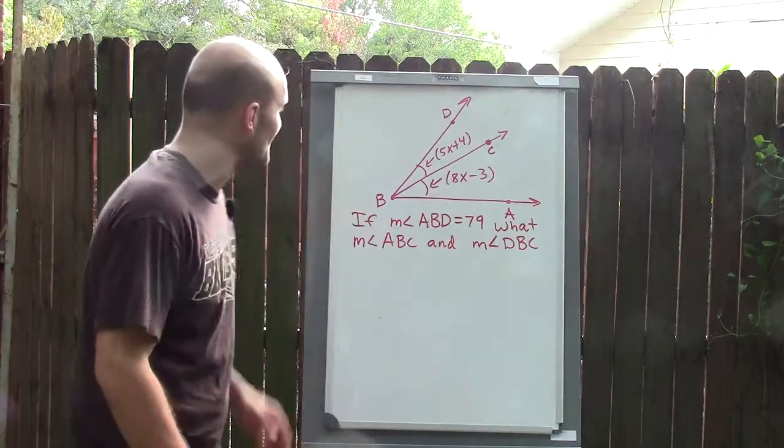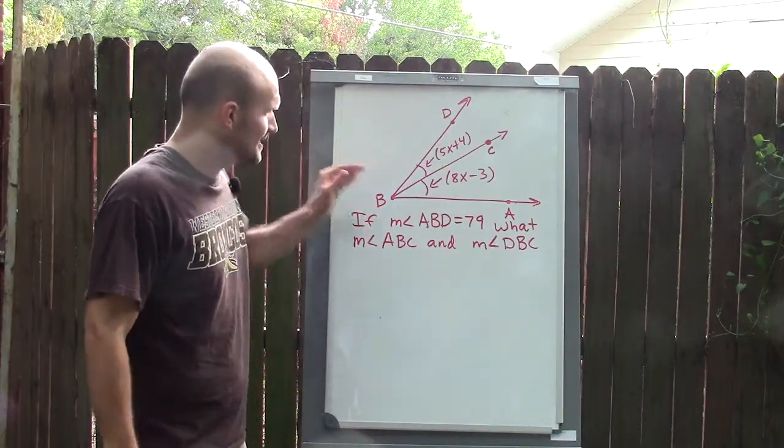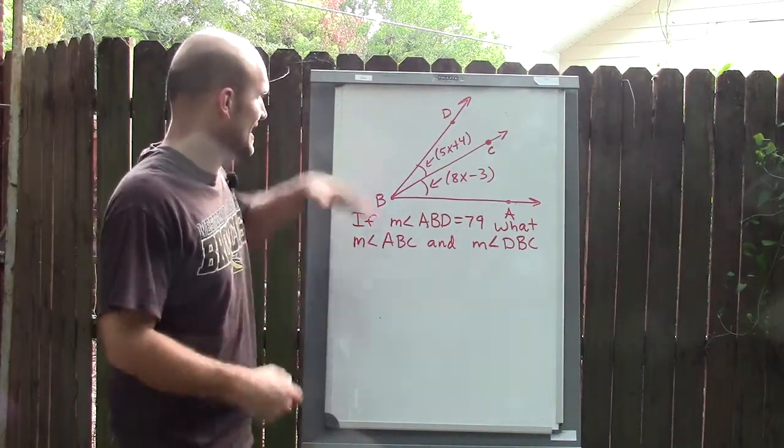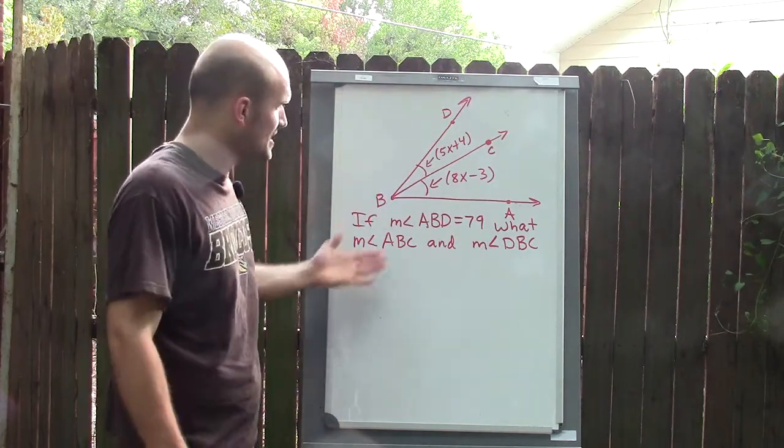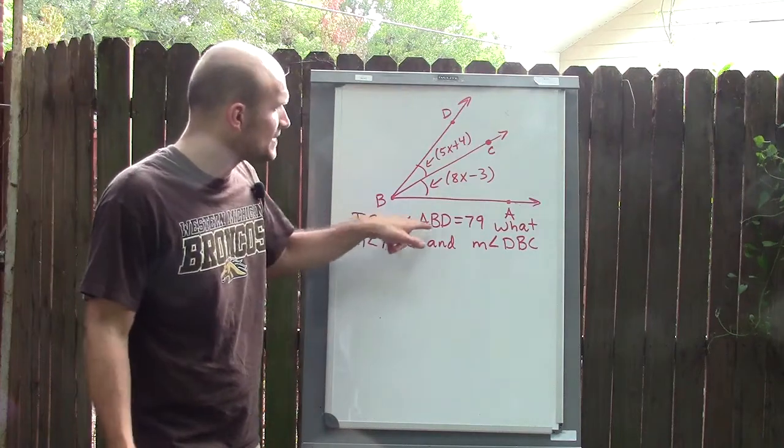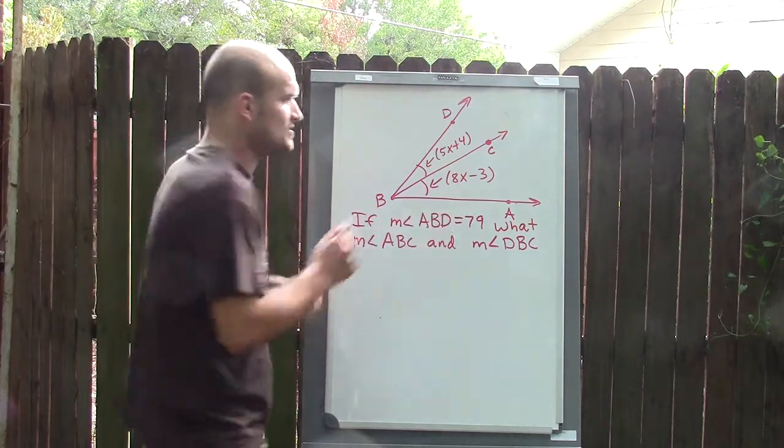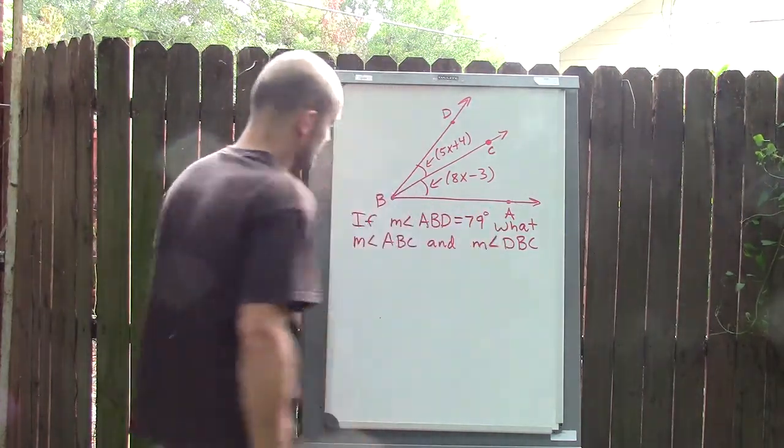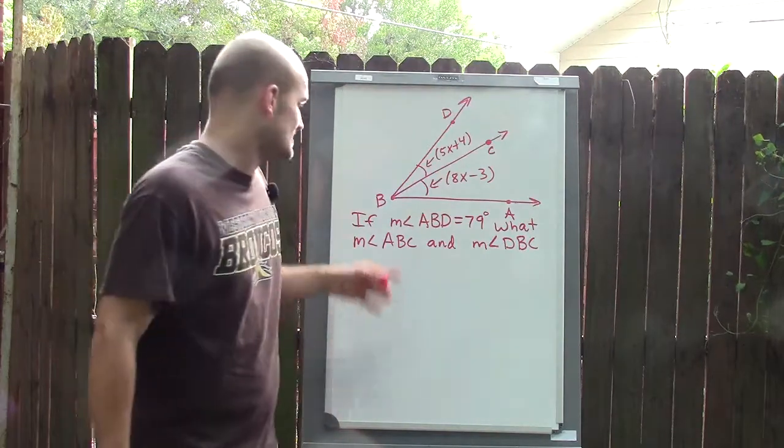Alright, so here we go. What I want to do is take a look at this problem. What we have is an angle called ABD, and the measure of angle ABD is equal to 79 degrees.